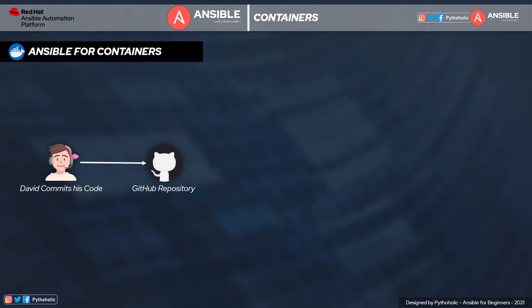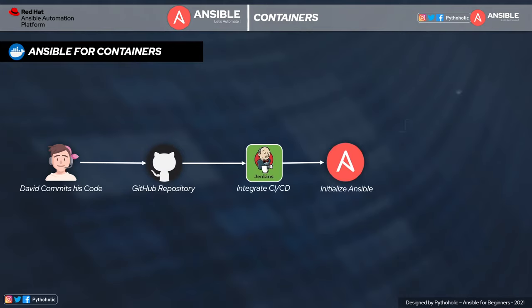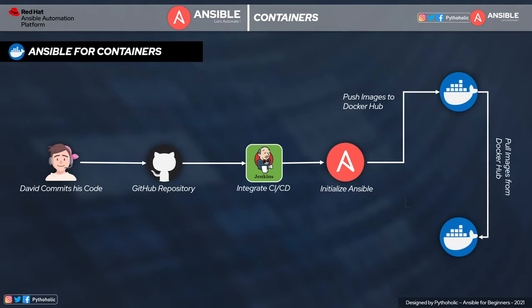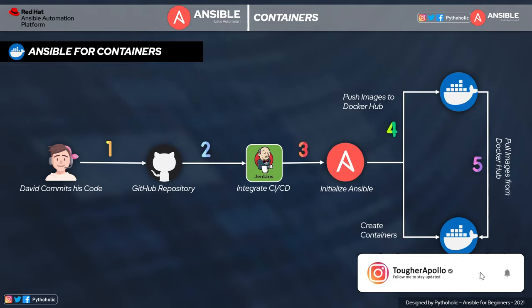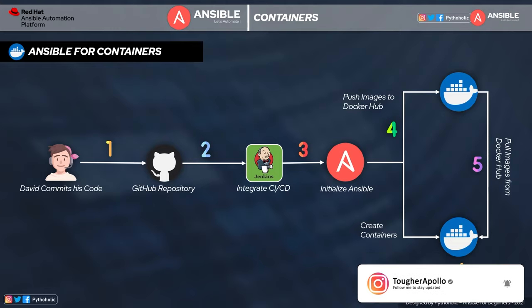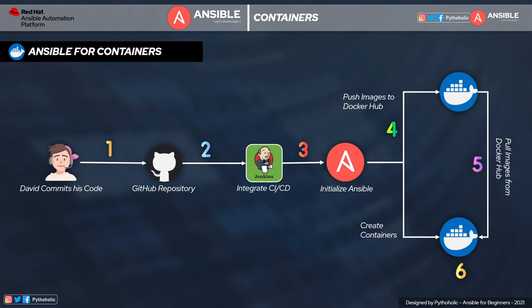Moving on to containers — if you are working with Docker in container-based application deployment, Ansible works with Docker as well. For example, we use Ansible for total application deployment with CI/CD in place: David commits his code changes to GitHub along with the Docker playbook, which is fed into Jenkins as part of the CI/CD pipeline. Ansible then pushes the Docker image to Docker Hub for redundancy and creates containers using the latest build — making it very easy to manage the steps involved in container deployment.